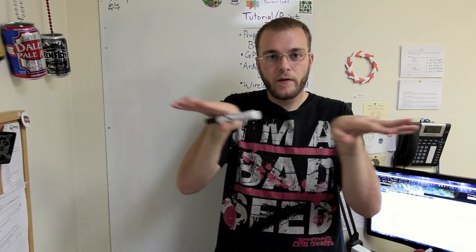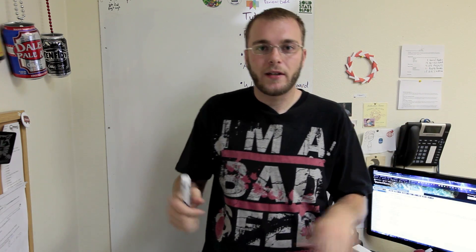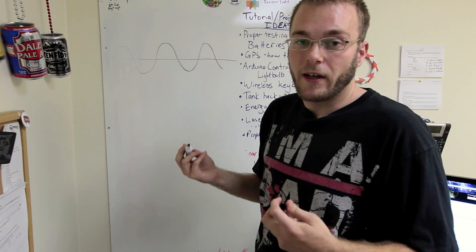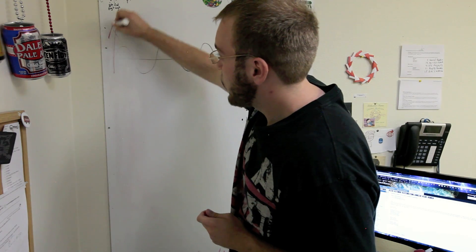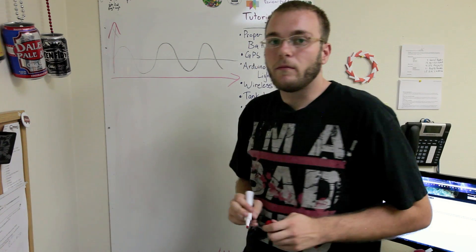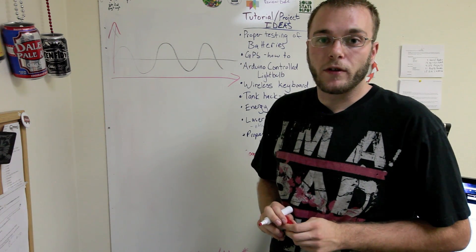Back in Electronics 101, we learn about frequency and amplitude. Amplitude is how high your wave goes and the frequency is how many periods you see in one given set of time.